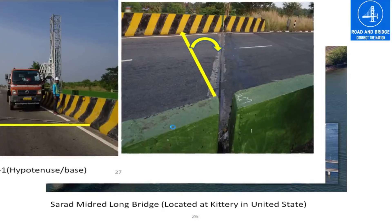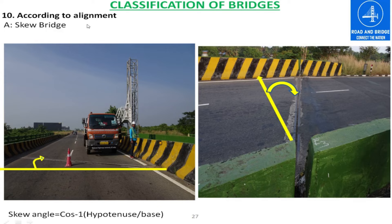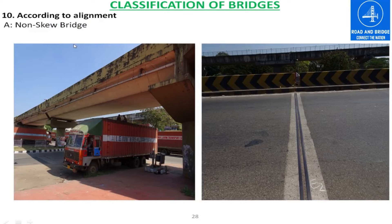According to alignment of the bridge, it can be classified into two categories: skew bridge and non-skew bridge. To understand this, you need to know what is the skew angle. The skew angle is the angle between the direction of the river and the perpendicular of the traffic direction.